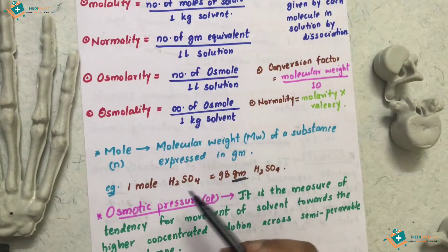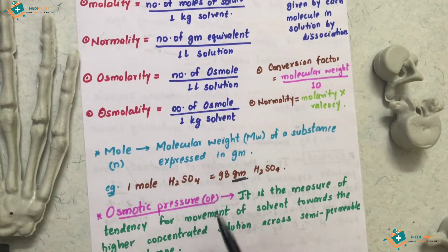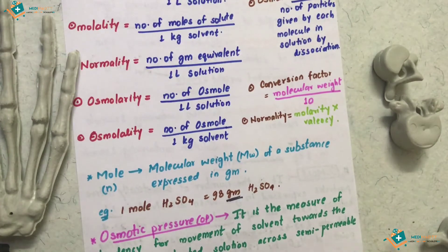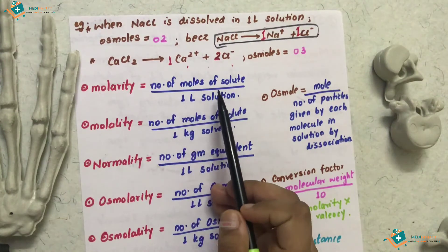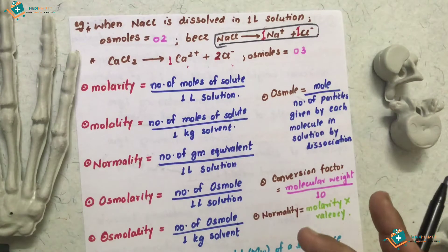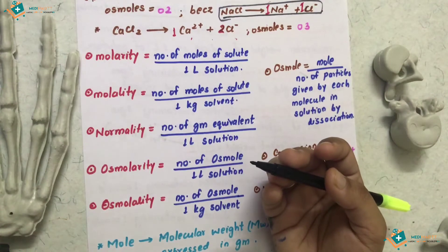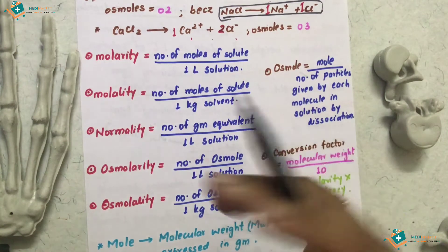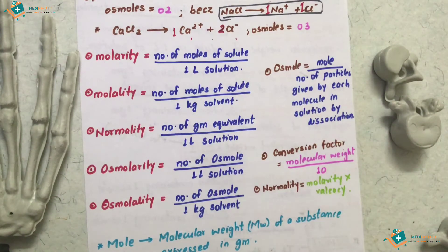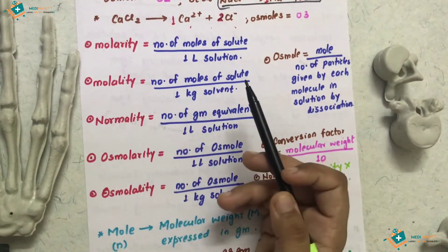Similarly, 1 mole of H2O is 18 grams. Molarity is the number of moles of solute per 1 liter of solution. You can divide either solute by solvent or solute by solution — the standard is 1 liter (1000 mL) of solution. Molality is the number of moles of solute per 1 kilogram of solvent.